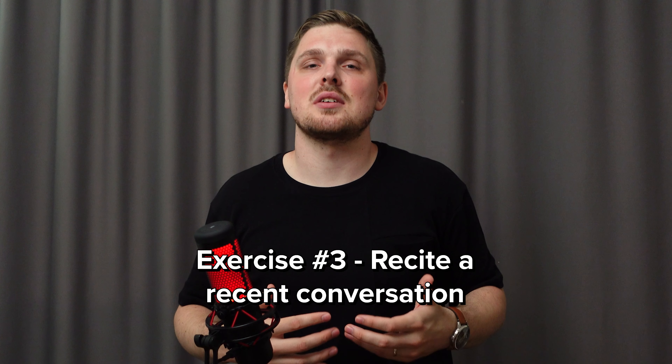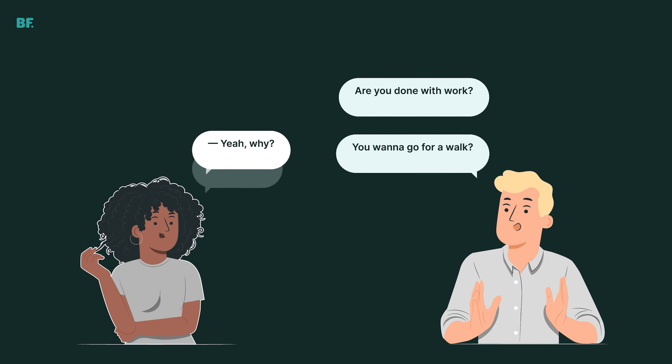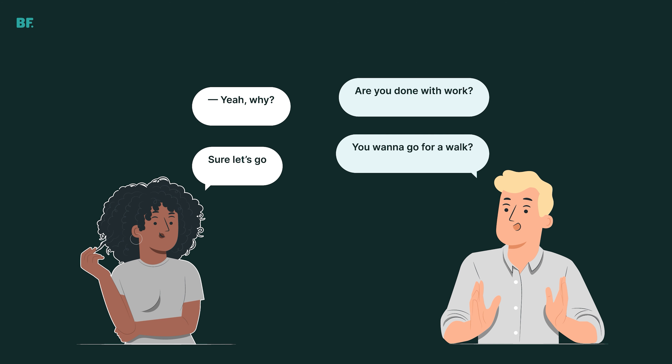Recite your most recent conversation. For example, I talk to my wife: 'Are you done with work?' — 'Yeah, why?' — 'You wanna go for a walk?' — 'Sure, let's go.' Pause this video and try to translate this into Russian. It should be super easy, but you may not know how to say 'are you done with something' or 'wanna go for a walk.' Those conversational phrases might slip your attention while you go for more tangible topics like hobbies, museums, and music. But they don't help you with the most basic conversations.